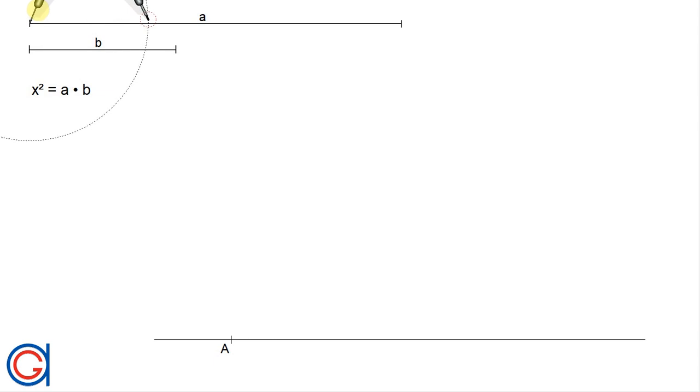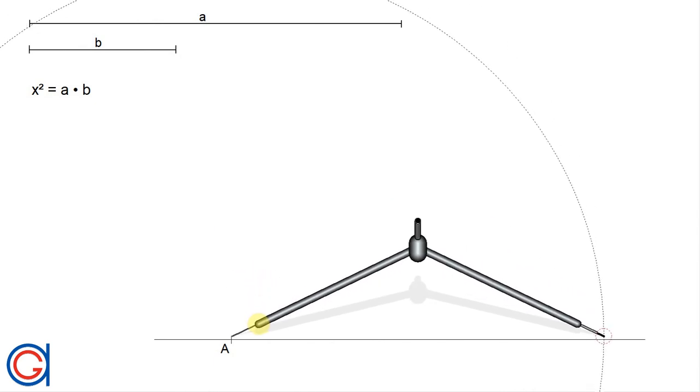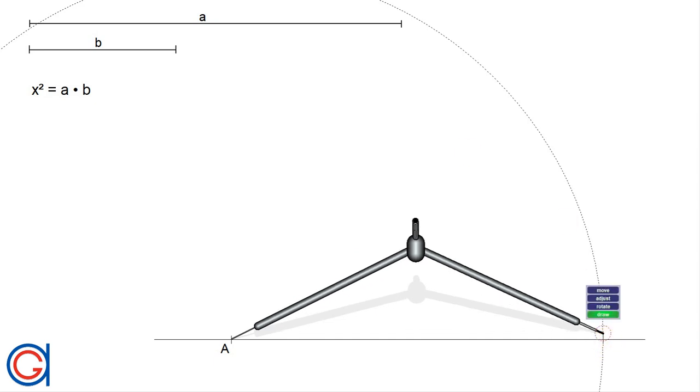Setting our compass to the length of the given line A and setting the compass on point A of the horizontal line, we scribe an arc obtaining a new point.